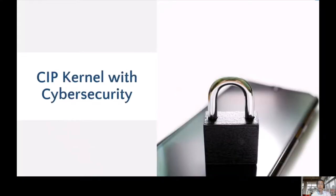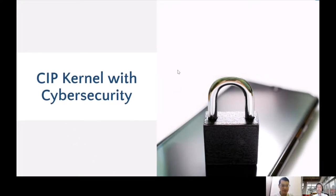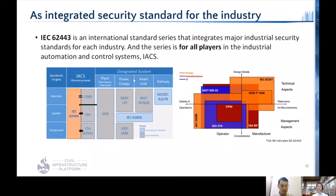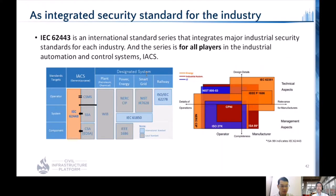Now let's talk about the CIP kernel with cybersecurity. It is a trend to exploit vulnerabilities of industrial control systems, such as civil infrastructure platforms related to our project. As shown in the slides, most of the vulnerabilities released in recent years are related to industrial control systems. We therefore must find a way to reduce cyber risk. Currently we are using IEC 62443, which was defined by integrating standards from significant industries.